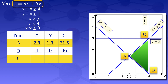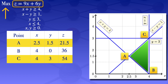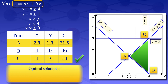At point C, x = 4 and y = 3. Evaluating the objective function: Z = 9(4) + 6(3) = 54. Since this is a maximization problem, we look for the largest value of Z. The largest value is 54, so the optimal solution occurs at point C: Z = 54 when x = 4 and y = 3.